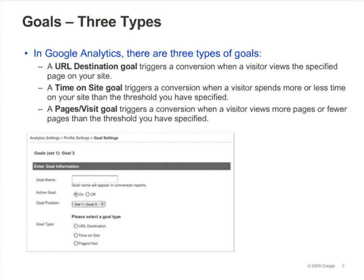A time on site goal is a time threshold that you define. When a visitor spends more or less time on your site than the threshold you specify, a conversion is triggered. A pages per visit goal allows you to define a pages viewed threshold, so when a visitor views more pages, or fewer pages, than the threshold you've set, a conversion is triggered.